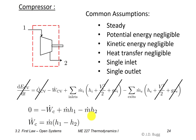Rearranging, the power of the compressor is W-dot_C = m-dot × (H1 − H2). This is identical in form to the turbine equation. However, H2 will be greater than H1 since work is done on the fluid, so this work will be negative — consistent with our sign convention.